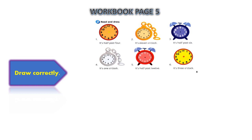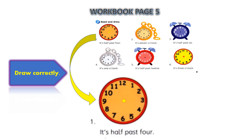Now we are going to continue with activity 2. For this one, you have to read and draw. You have to draw the long hand and the short hand. Let's look at this example: it's half past 4. Half means 30 minutes, right? So you draw the long hand first — 30 minutes here. And then past 4 — you get number 4 here, and you draw the short hand here like this. Can you answer numbers 2, 3, 4, 5, and 6? All the best — do your best.